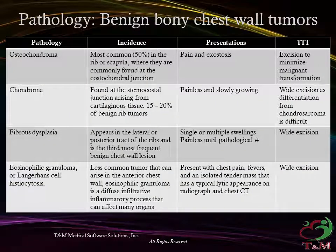Benign chest wall tumors are less common than malignant lesions and arise from nerve, blood vessel, osseous, cartilaginous, or fatty tissue origin. Osteochondromas are most common in the rib or scapula, where they are commonly found at the costochondral junction, and develop from abnormal growth of normal tissue. These masses frequently cause pain as they progress with growth of bony exostosis. Wide excision is recommended for fear of malignant transformation.